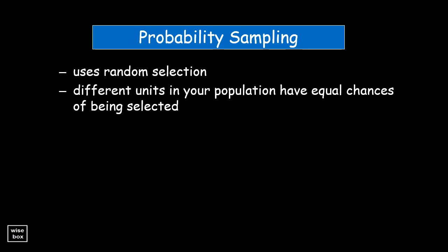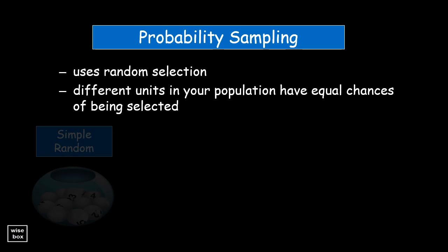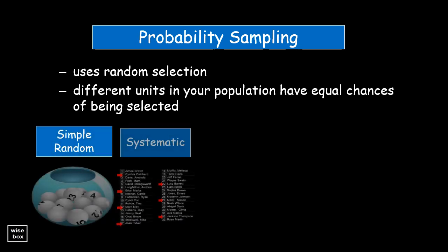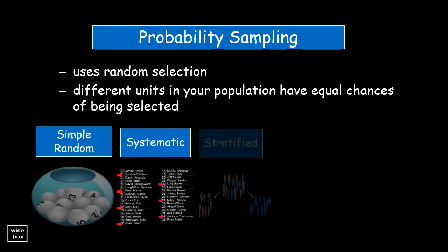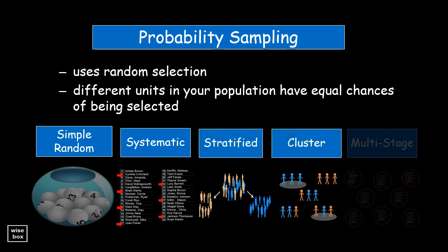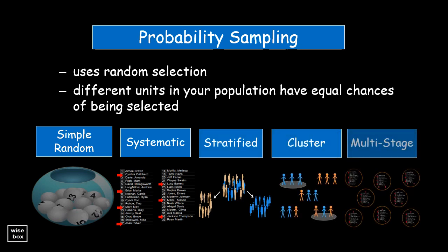The different types of probability sampling include simple random, systematic, stratified, cluster, and multi-stage sampling.